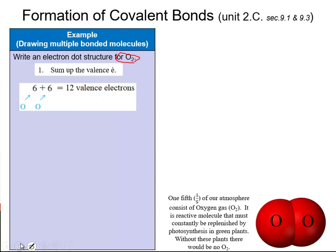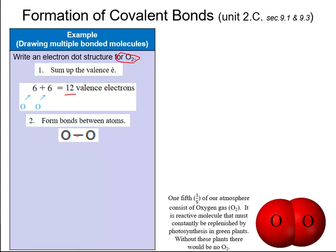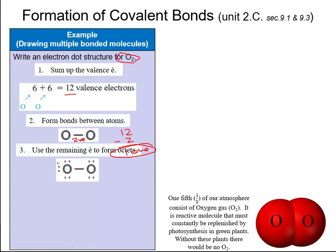When we try oxygen, we first sum up the valence electrons. Each O has six electrons, so when added together we get 12 electrons. I make the connection between each O, using two valence electrons, leaving 10 valence electrons remaining. I distribute those 10 electrons to try to make octets — that accounts for all 12 total. But notice there is an octet on one side, but not the other.